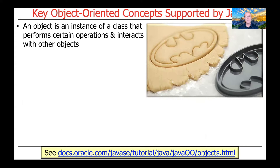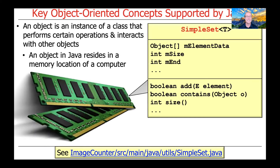An object is an instance of a class that performs certain operations and often interacts with other objects. You can think of a class as basically being the cookie cutter and an object as being the cookie that's made with the class. An object in Java resides in a memory location of a computer. Here's a very simple example that we'll take a look at later called SimpleSet, and we'll use that as our guiding discussion here.